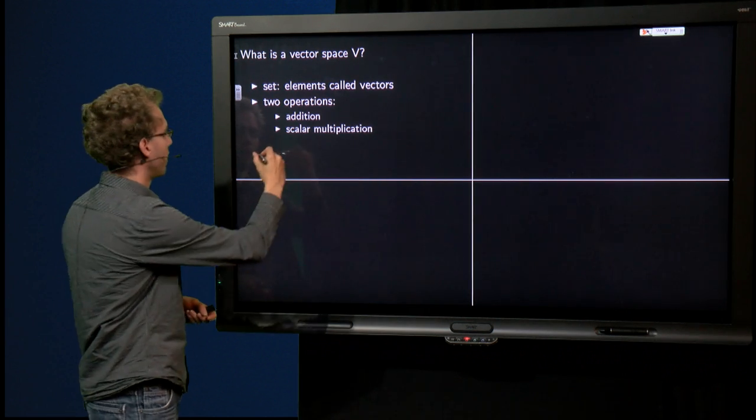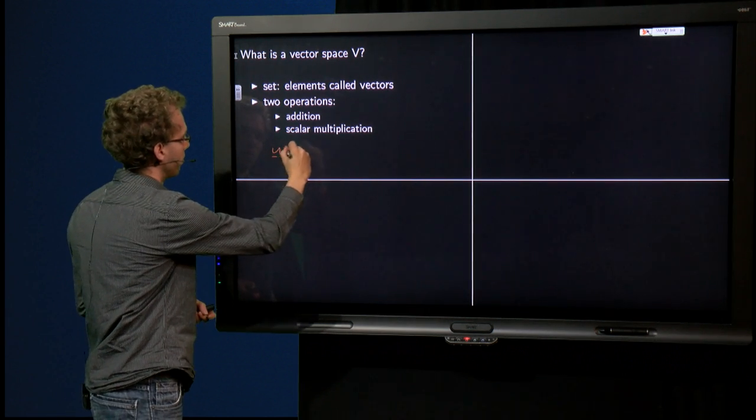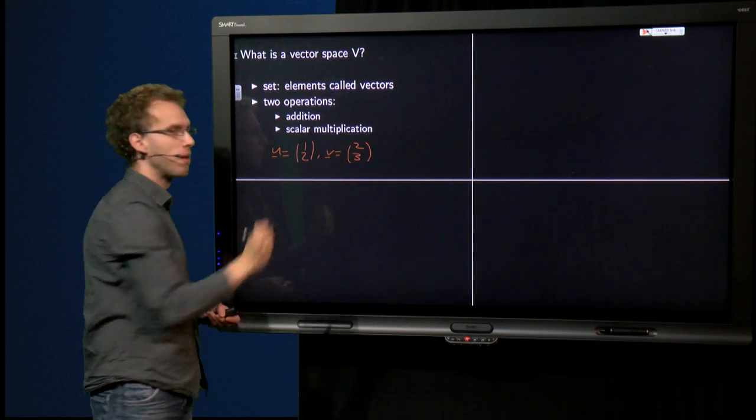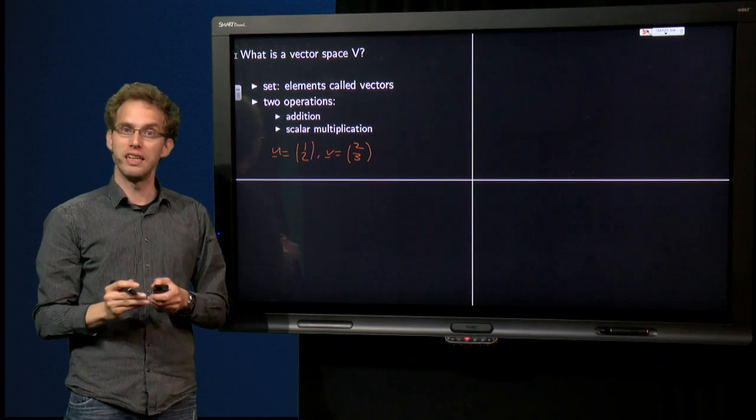So, let's take two normal vectors like u equals (1, 2), v equals (2, 3), whatever, and let's look at addition first.